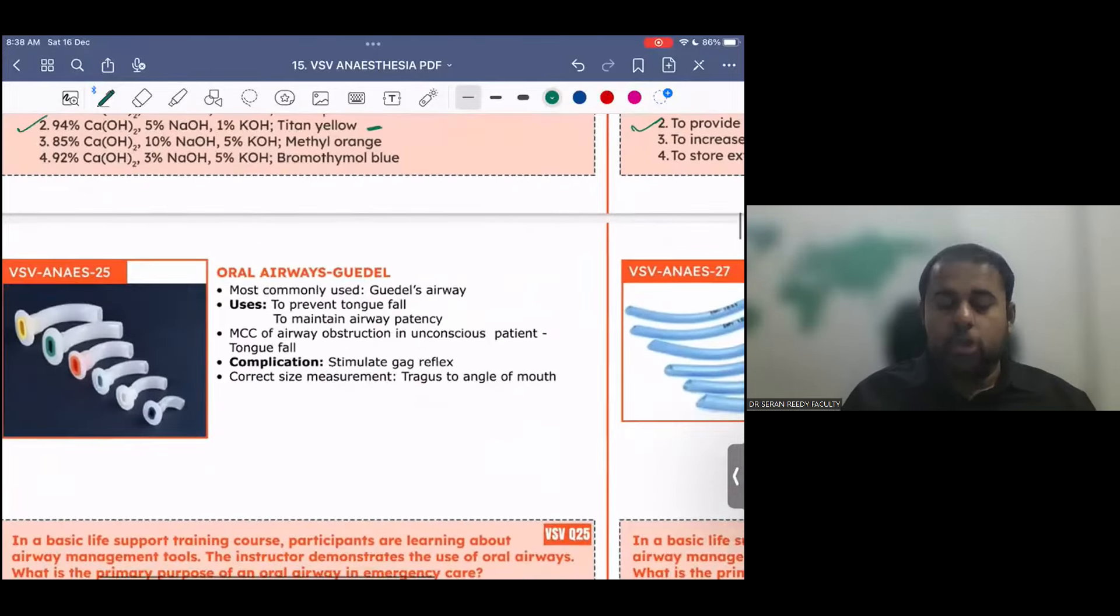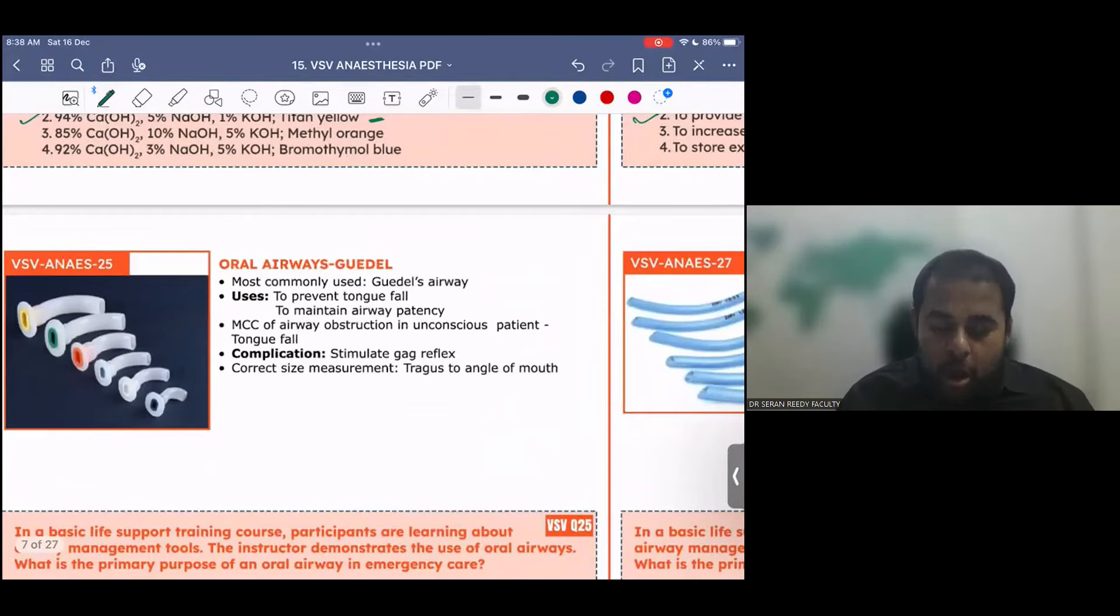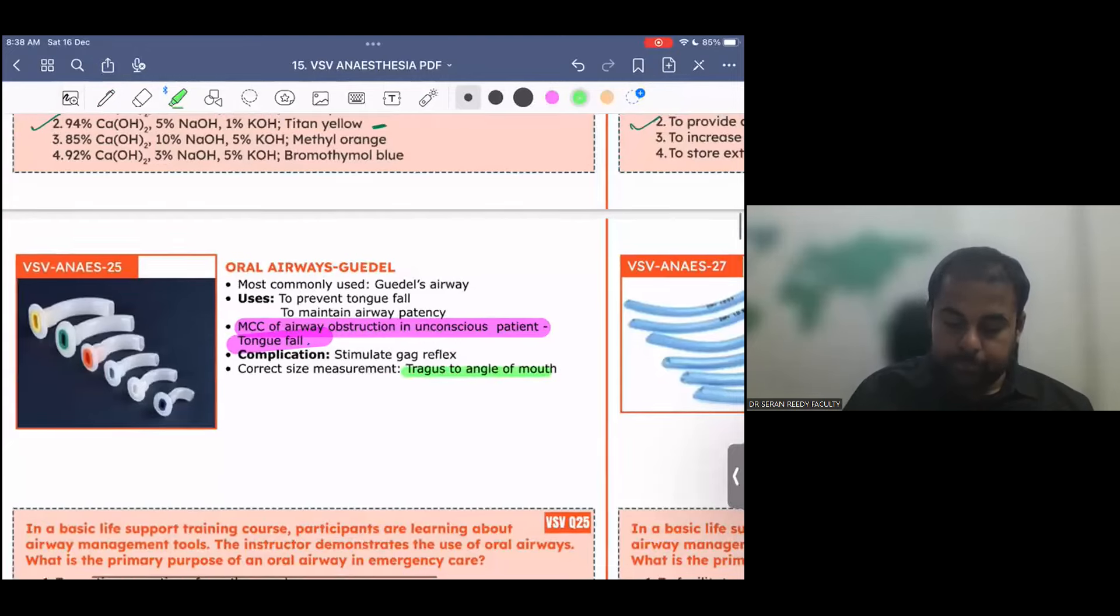To prevent this airway obstruction, tongue fall patients, you use this oral airway. There are various airways, the most commonly used is Guedel's airway, various sizes will be there. The use is to prevent the tongue fall and to maintain the airway patency. And the most common cause of airway obstruction in unconscious patient is tongue fall. To prevent this airway obstruction, tongue fall patients, you use this oral airway. The complication is, once you take a wrong size, it may stimulate the gag reflex. The correct size is required. The easiest way of measurement is correct size from tragus to the angle of the mouth. Tragus to the angle of the mouth is what you measure.